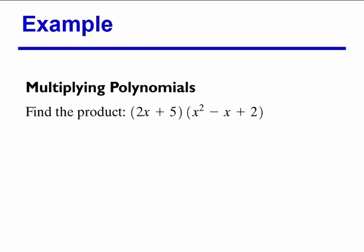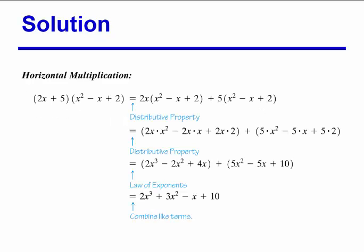Next is multiplying polynomials. We find the product of 2x plus 5 times x squared minus x plus 2. Using the distributive property, we do 2x times x squared minus x plus 2, plus 5 times x squared minus x plus 2. We multiply out 2x and 5, then combine like terms. The final answer is 2x to the third plus 3x squared minus x plus 10. You can also do vertical multiplication.